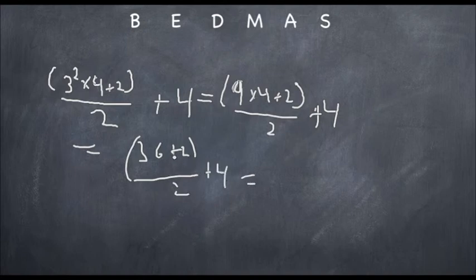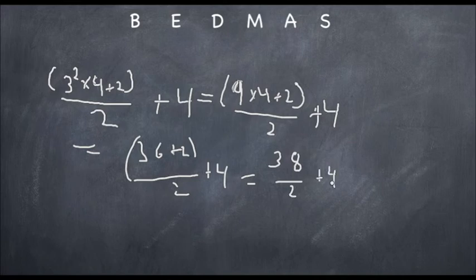Now what do we do? Well, we do the brackets first. Then in the bracket, there's only one thing to do, so it's addition, 38 over 2 plus by 4. And now, sorry, now what do we do first?